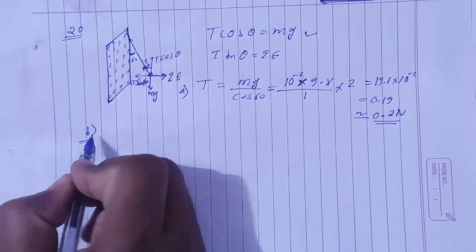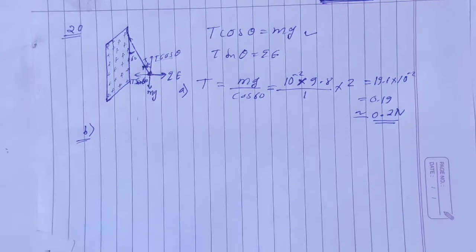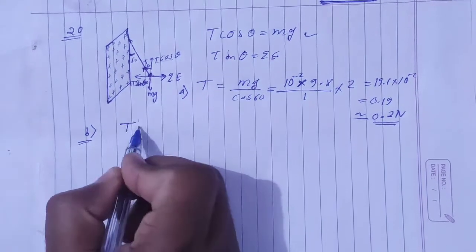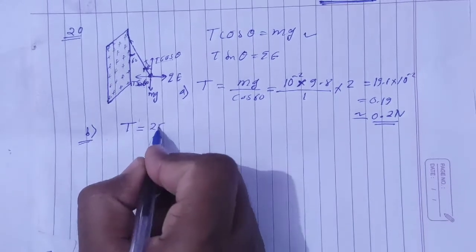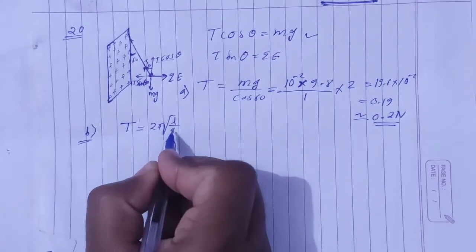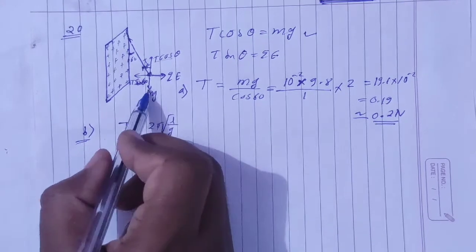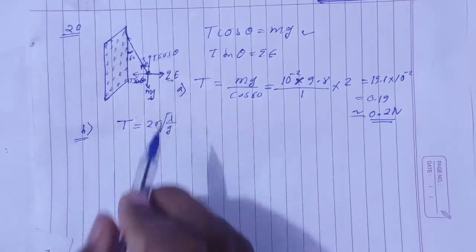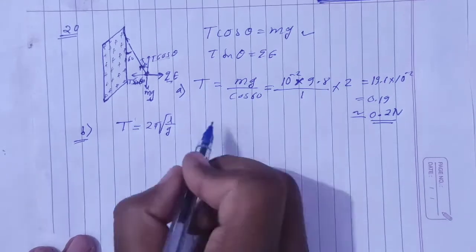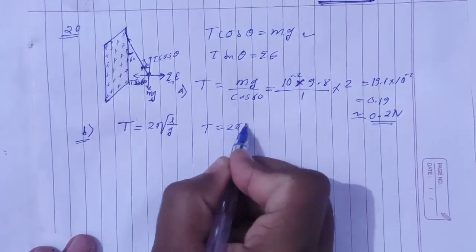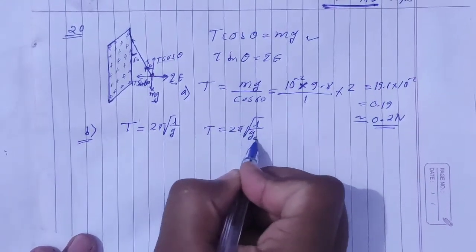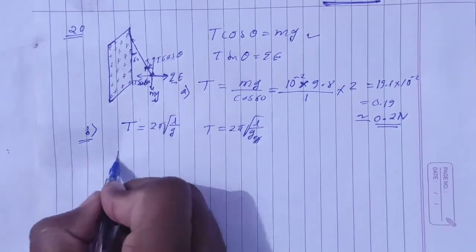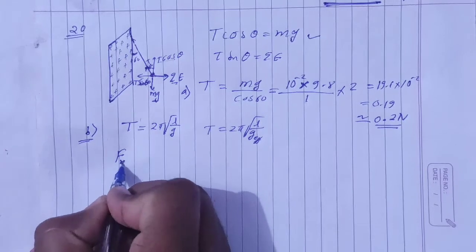Now we have to find the time period. This is simple pendulum. The simple pendulum time period is 2π root L by g. But what is simple pendulum basically? Because of the gravitational force. Here there is electric force. Here we have the time period with the formula 2π root L by g effective. First of all, we need to find effective force.